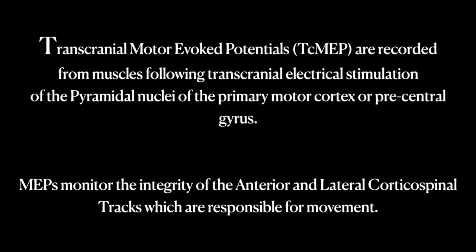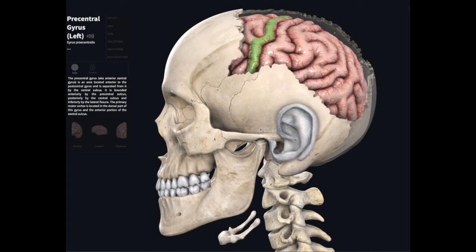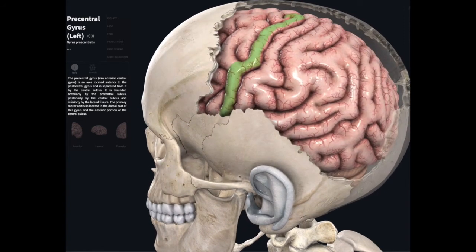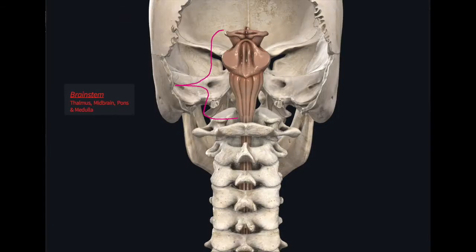Transcranial Motor Evoked Potentials are recorded from muscles following transcranial electrical stimulation of the pyramidal nuclei of the primary motor cortex or precentral gyrus. They monitor the integrity of the anterior and lateral corticospinal tracts, which are responsible for movement. The pyramidal tracts include both the corticobulbar and corticospinal tracts.